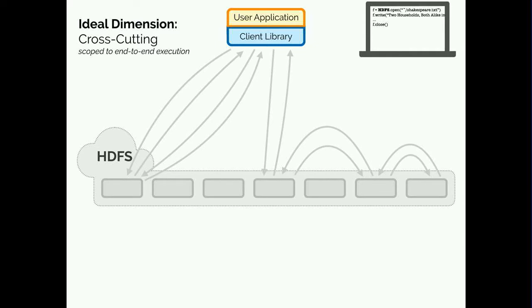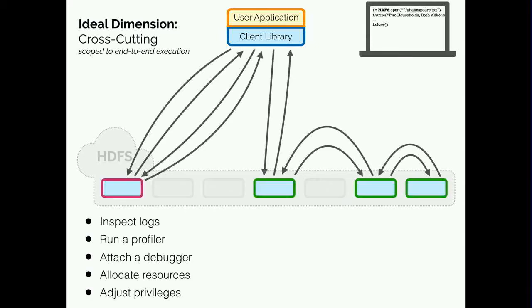Stepping back, the actual dimension we're looking for is what I call the cross-cutting dimension — scoped to the processes and machines visited by the end-to-end execution, and also scoped to only that end-to-end execution. These typical tools don't do well in this setting because they are instead scoped to the per-process or per-machine dimension.